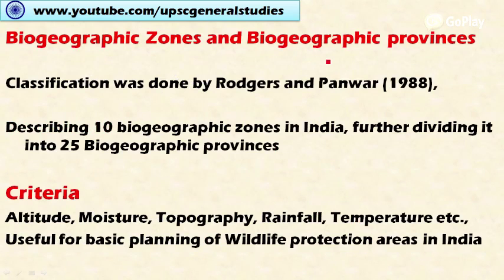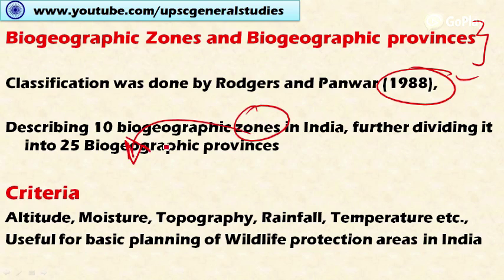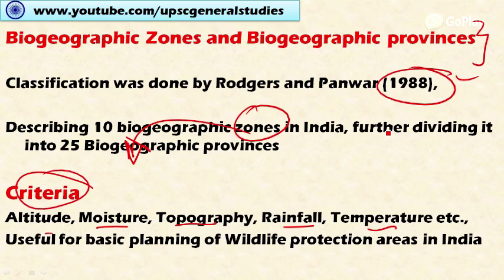The classification of India into different biogeographical zones was made by Rogers and Panwar in 1988. They divided India into ten biogeographical zones, further divided into 25 biogeographical provinces. They followed certain criteria — altitude, moisture, topography, rainfall, and temperature — while dividing India into different biogeographical zones. These zones have distinct vegetation and fauna, and similar patterns of rainfall and climatic conditions.